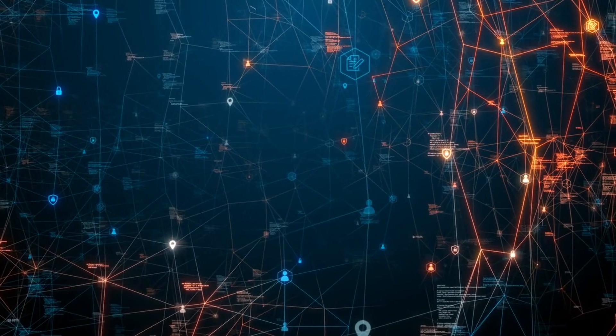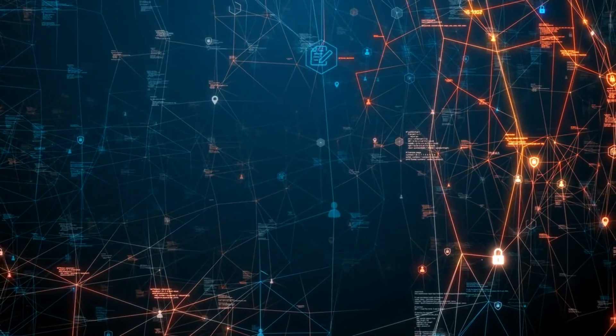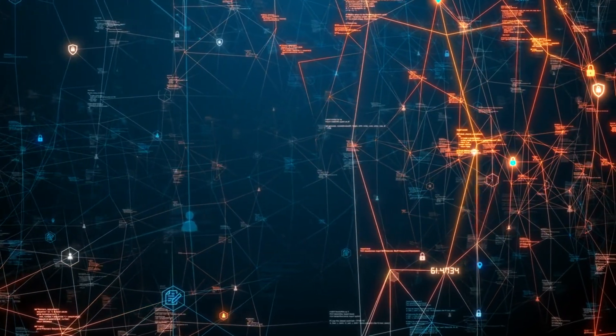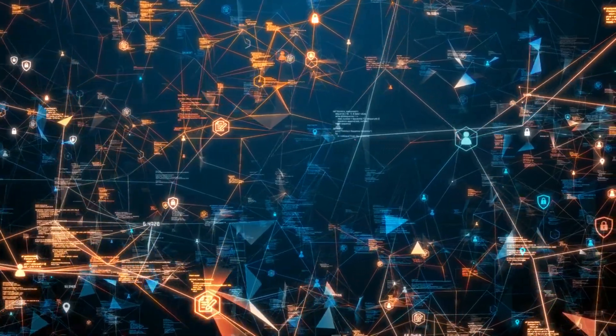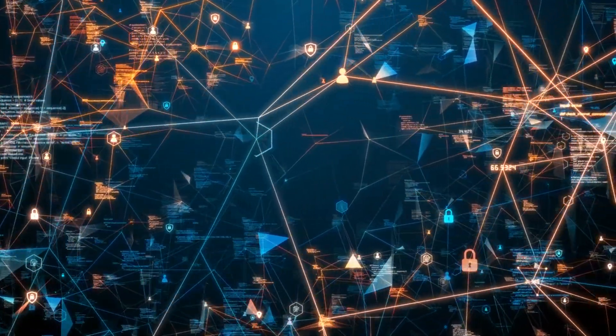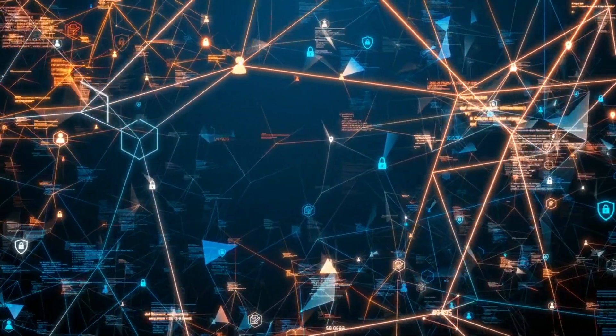Subsection 3.1.2: Smart Contracts and Automation on Algorand. Smart contracts play a pivotal role in facilitating seamless transactions within the metaverse. We analyze how Algorand's implementation of smart contracts and automation features enhances the overall efficiency, transparency, and trust in metaverse real estate operations.